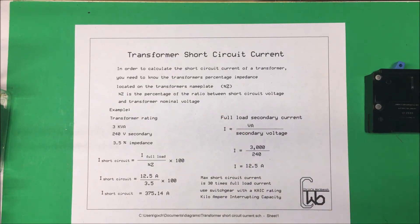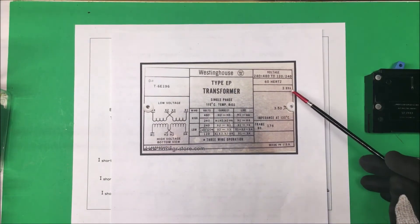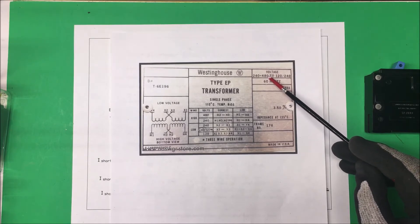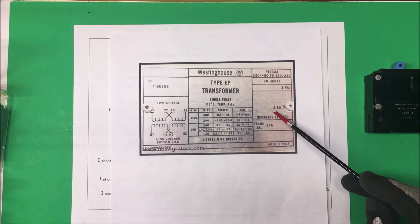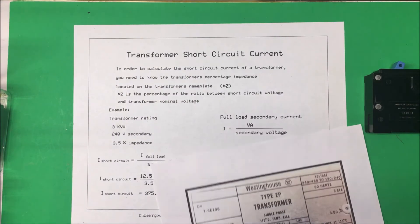This is a Westinghouse transformer, a 3 kVA, and we're going to set it up from 480 to 240 volts, and our percent impedance is 3.5 percent. There should be a Z under that right there. So that's our transformer.